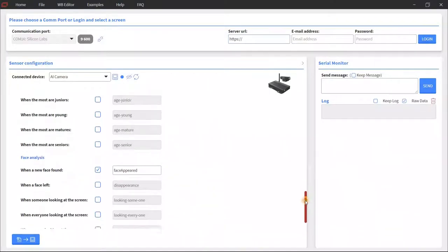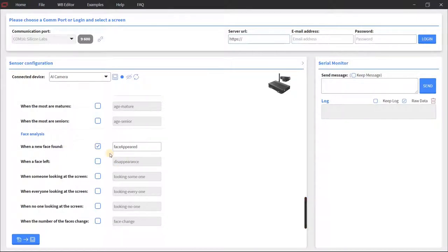The face analysis below, you can see that we can send a message when a new face appears or an actual face disappears. If someone is looking at the screen, if no one is looking at the screen, etc. And we can also send a message when the number of faces is changing. So let's say that there are four people in front of the camera and when it goes down to three or goes above four, then we send a notification.